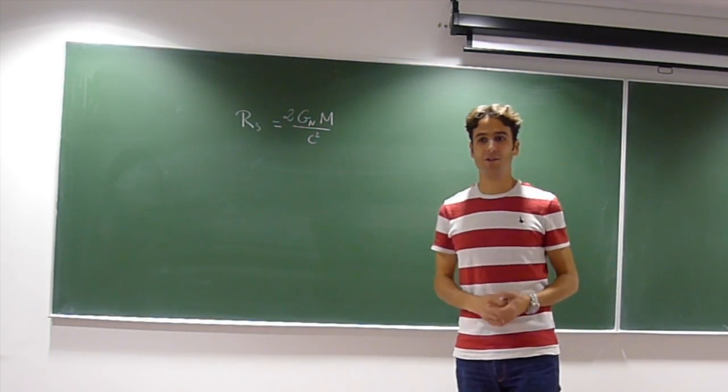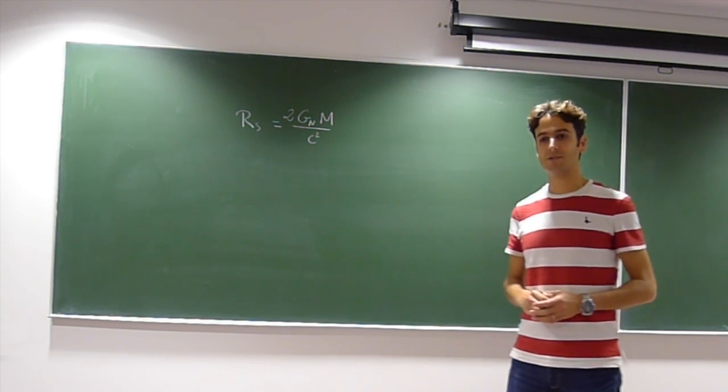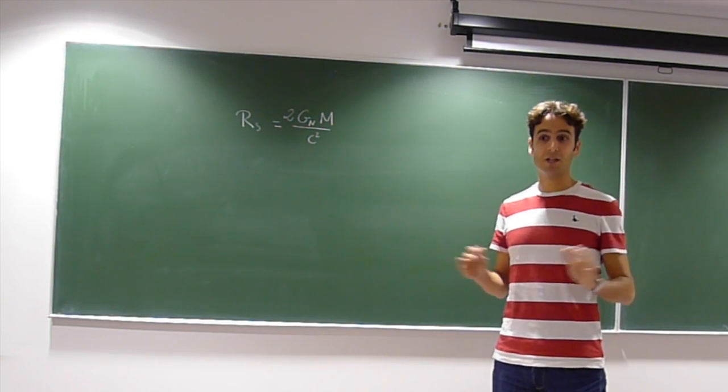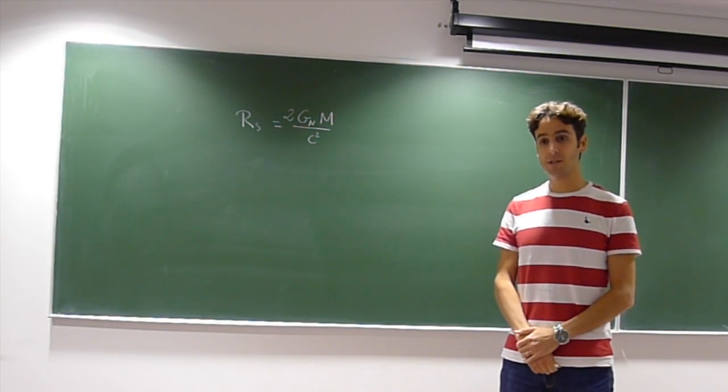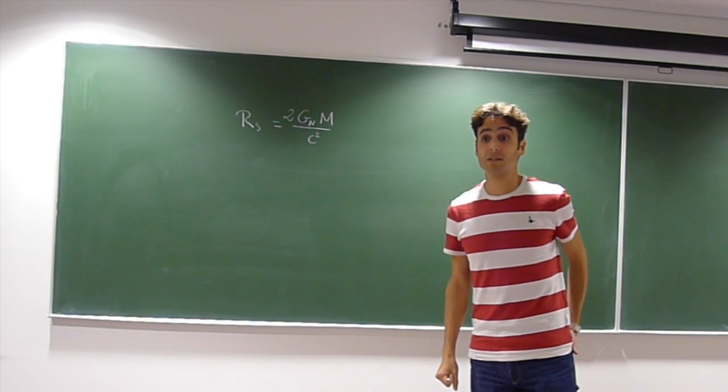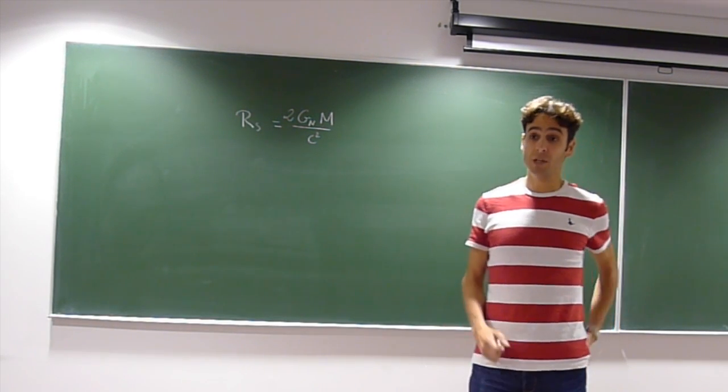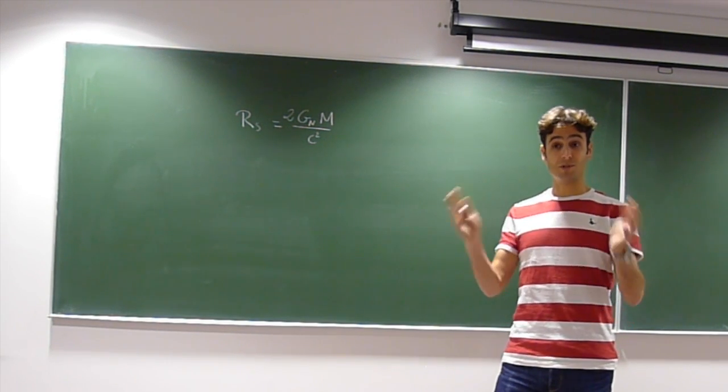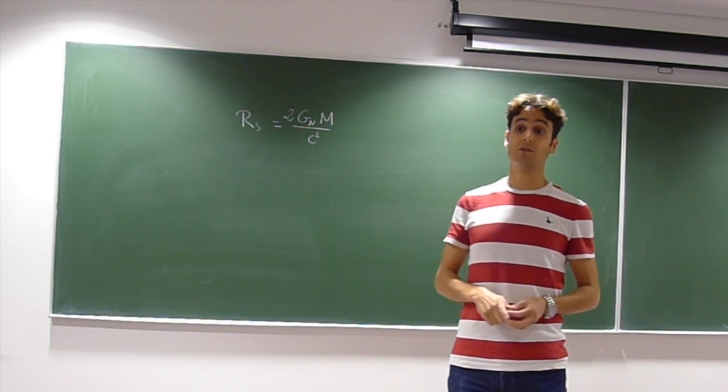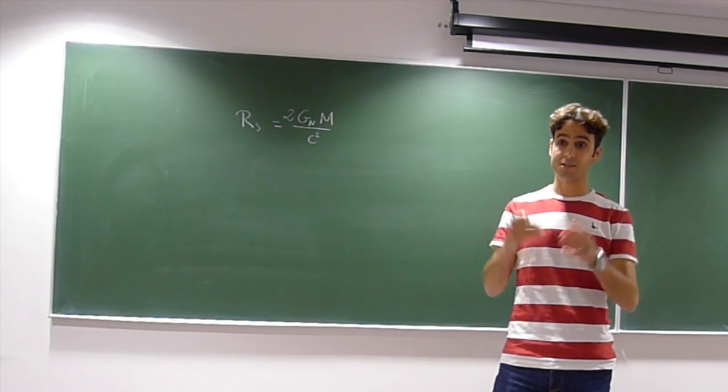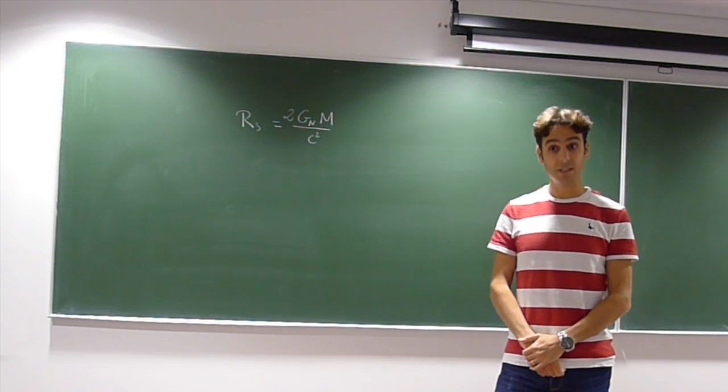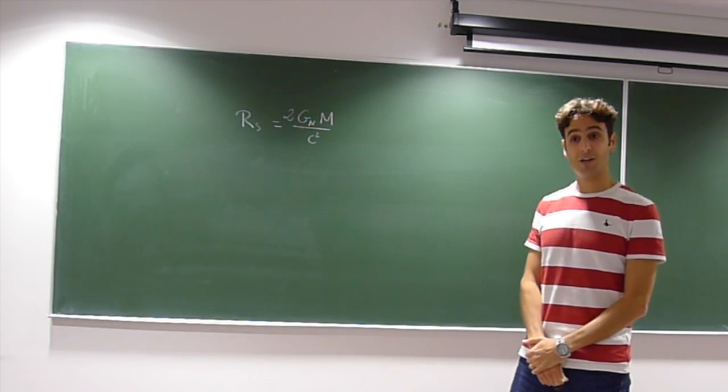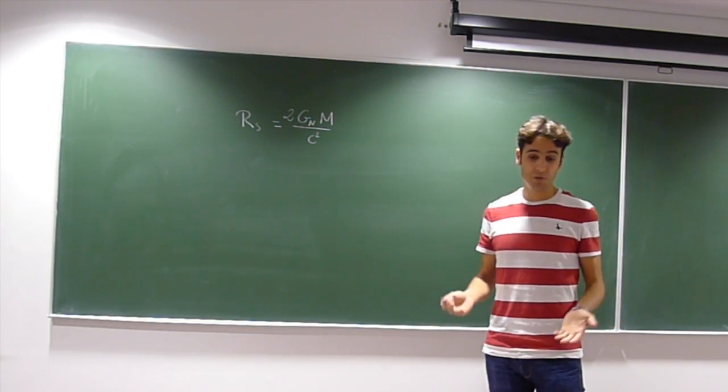There's some debate about whether it is indeed a soft surface or not, so it's not a completely settled issue. But according to general relativity alone, it should be a soft surface. This is one of the experimental signatures astronomers are looking for. When you see gas falling into a black hole, if the horizon wasn't a soft surface, you would expect emission of x-rays as the gas falls. This has not been seen, so if the black hole is large enough, you wouldn't feel anything.